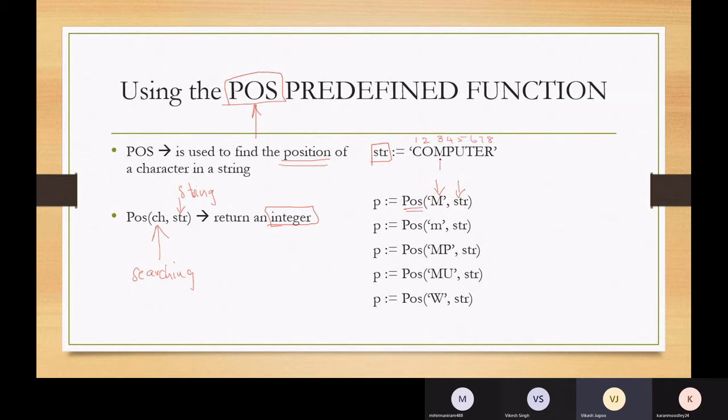Well, there we are. M is at position 3. So the value that will be returned is 3. P will have the value 3.